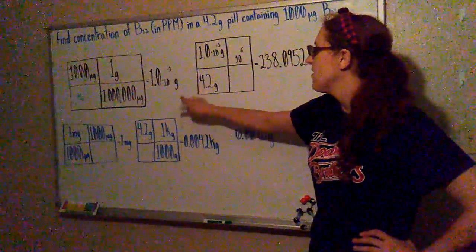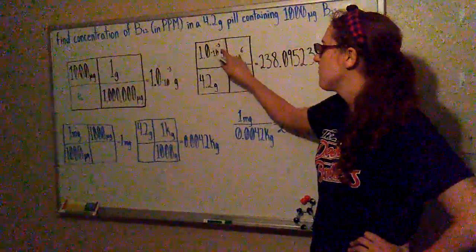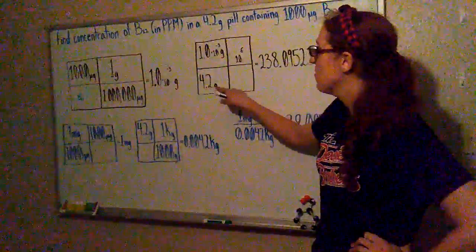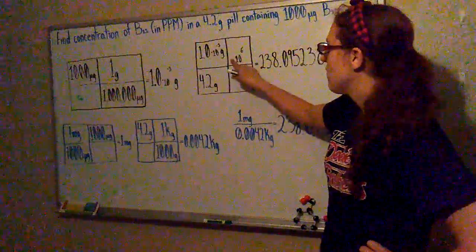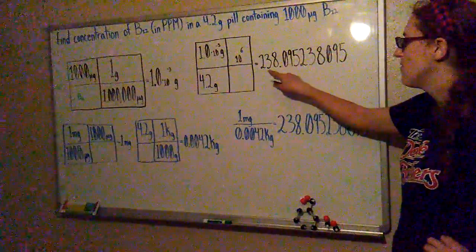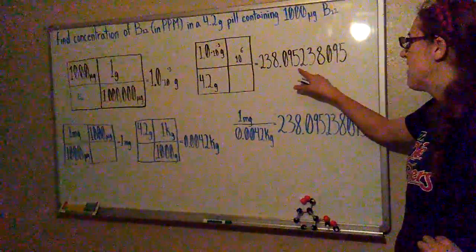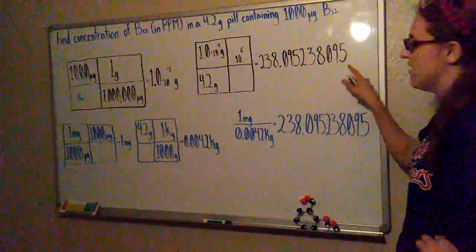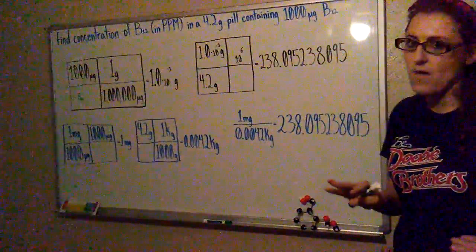And then we divide the 1 times 10 to the negative 3 grams by 4.2 grams and multiply it by 10 to the 6th power, 1,000,000, and that gives us 238.095238095.